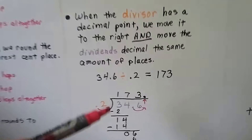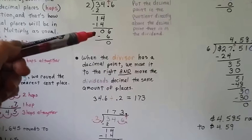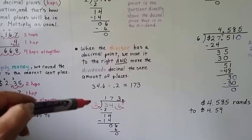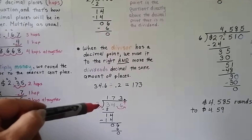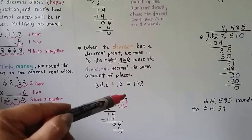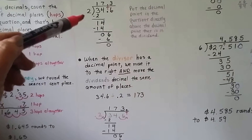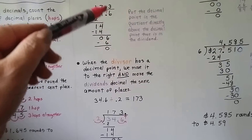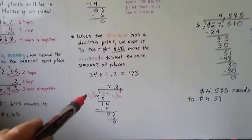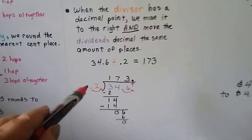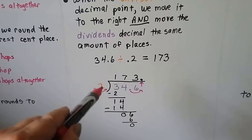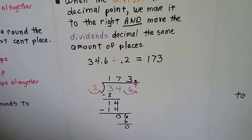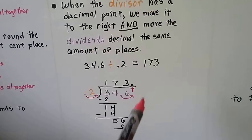So here's the same numbers as the previous example. The only difference is the divisor had a decimal point, so we had to move it back. Now the decimal point is back behind the three, whereas in the other one the divisor was two as a whole number, so we didn't have to move the decimal point and it went straight up between the seven and the three. So when you see a decimal point in the divisor, move it back however many hops you need to make it a whole number, then move the decimal point in the dividend the same number of hops. That's where the decimal point will go in the quotient.